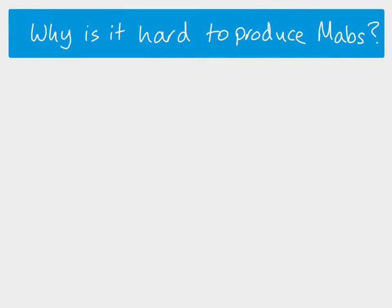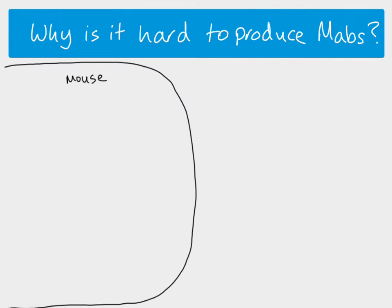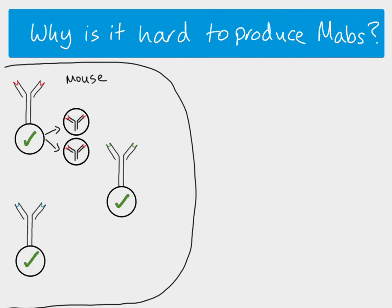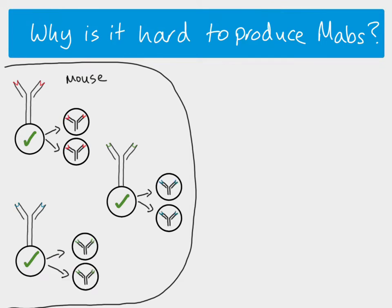It's quite difficult. MABs is the shorthand for monoclonal antibodies and it is difficult to produce them. When scientists do it they tend to use mice. If you introduce a pathogen into a mouse, the B cells are selected for and they proliferate, differentiate, and we end up with plasma cells. These plasma cells can produce the antibody we want, but the mouse will also have plasma cells producing other types of antibodies to match different antigens, and we don't want those.